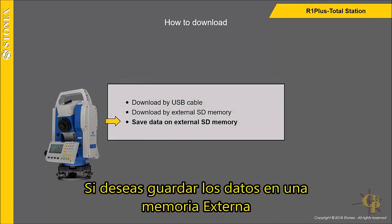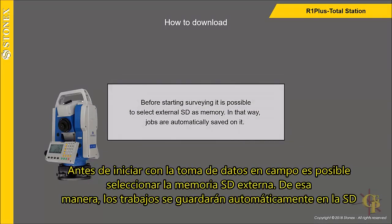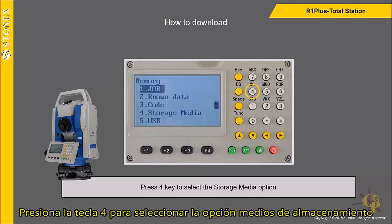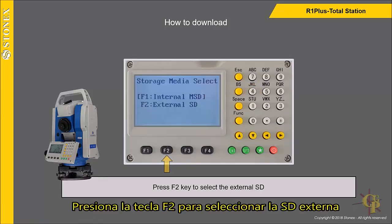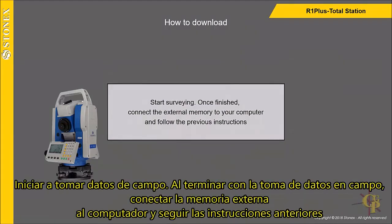If you want to save data on external SD memory, before starting surveying it is possible to select the external SD as memory. In that way, jobs are automatically saved on it. Press the F3 key to enter the memory menu, press the 4 key to select the storage media option, and press the F2 key to select the external SD. Start surveying, and once finished, connect the external memory to your computer and follow the previous instructions.